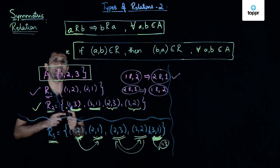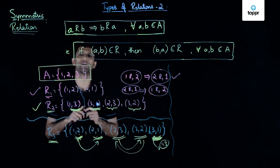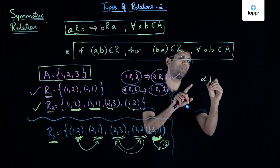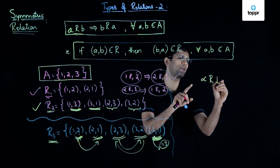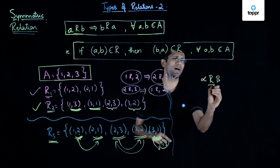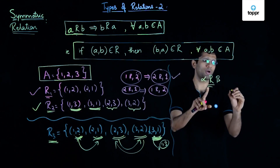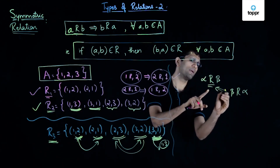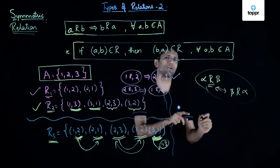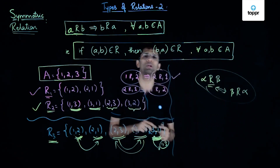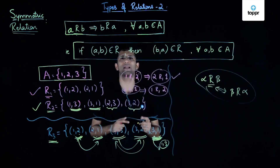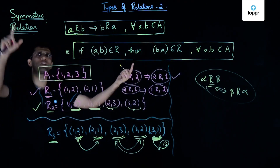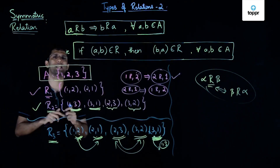In summary, for a relation to be a symmetric relation on a set A, it should always hold that if alpha is related to beta under relation R, then beta must also be related to alpha. If even one of these implications does not hold, then the relation R is not a symmetric relation.